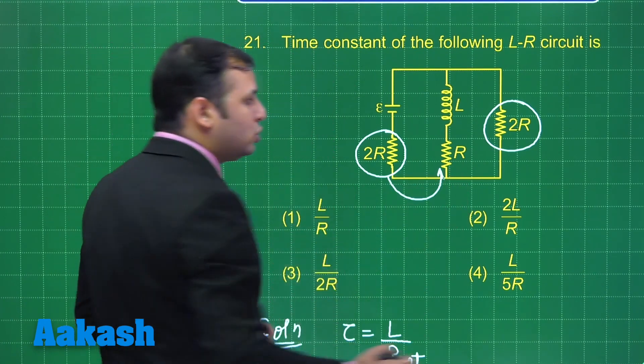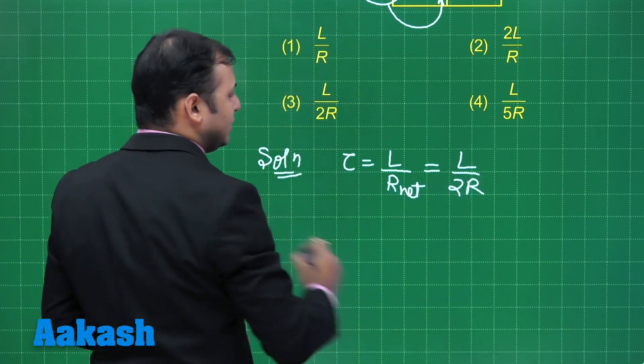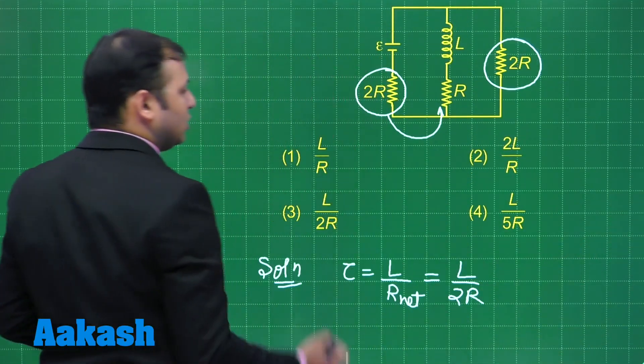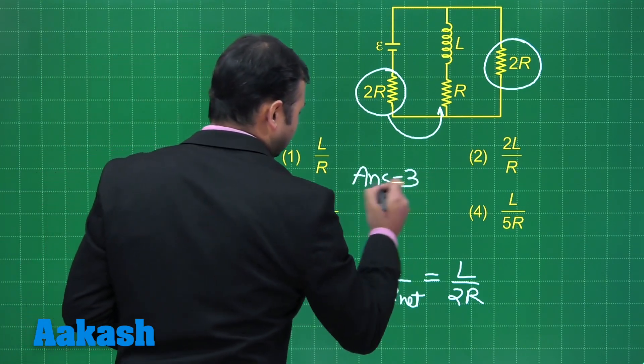So, it is net 2R. So, with this formula we will find L upon 2R as a time constant. Let us see which is the best suited option among the 4. Yes, option number 3 is the correct answer to the question.